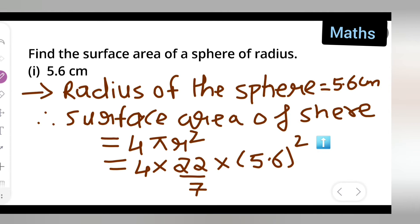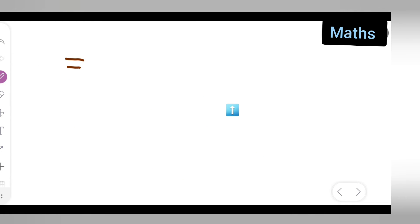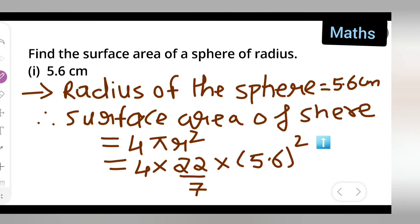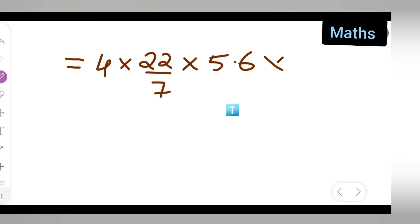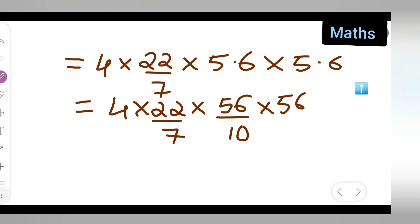Next let me continue on the next page. Is equal to 4 multiplied by 22 upon 7 multiplied by 5.6, 5.6 multiplied by 5.6. If you want to remove the decimal point, what you have to do is to make it more easier way we remove the decimal point. Like how 4 multiplied by 22 upon 7 right? It is multiplied by 56 upon 10 multiplied by 56 upon 10.